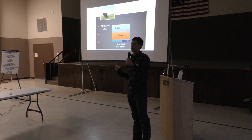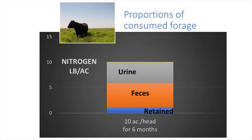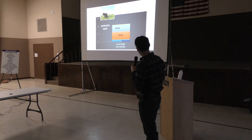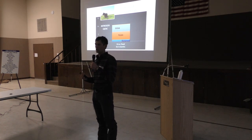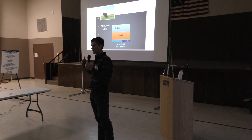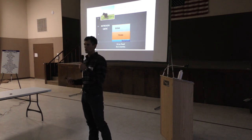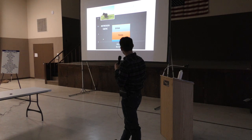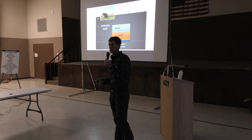Back to the same example: one cow on 10 acres for six months. How much nitrogen does she actually eat? About 10 pounds per acre. Where does it end up? Like I said, most of it — urine and feces — is going back to the soil. Now once it does go back to the soil, some of that will be released back to the atmosphere as a gas, but it's not going directly from the animal to the air. It's getting into the soil first. The retained portion: nitrogen is a component of muscle, so the nitrogen retained really is in that calf's body as it grows. When you take the calf off pasture, you are removing some nitrogen from your pasture, but it's only about two pounds per acre — a relatively small amount.